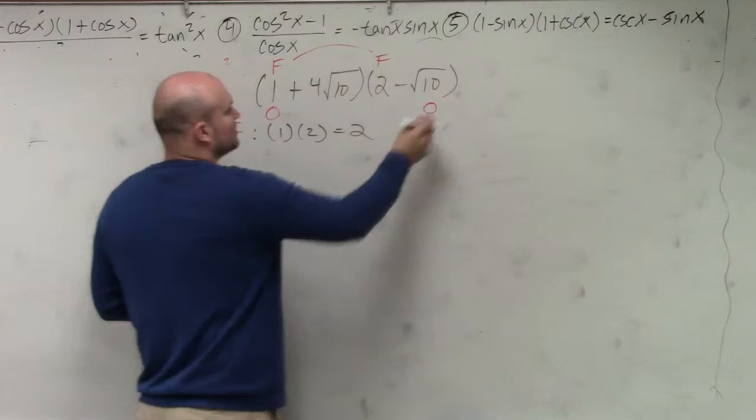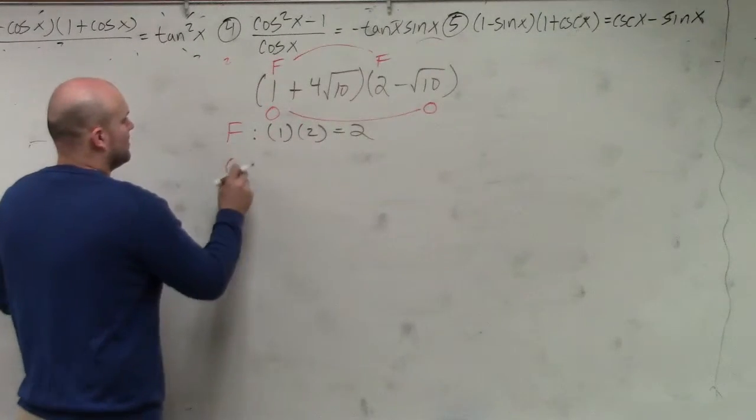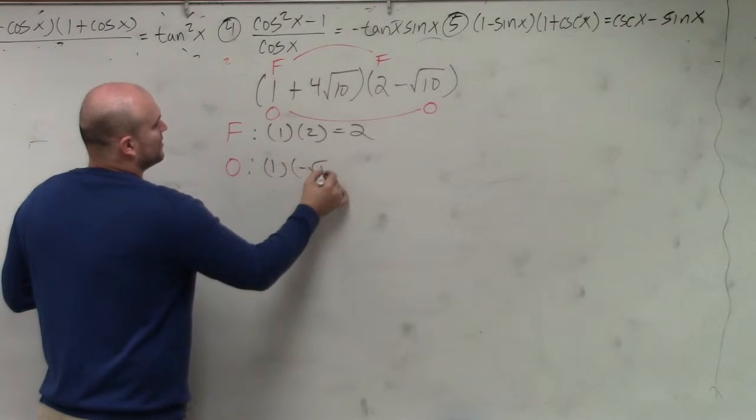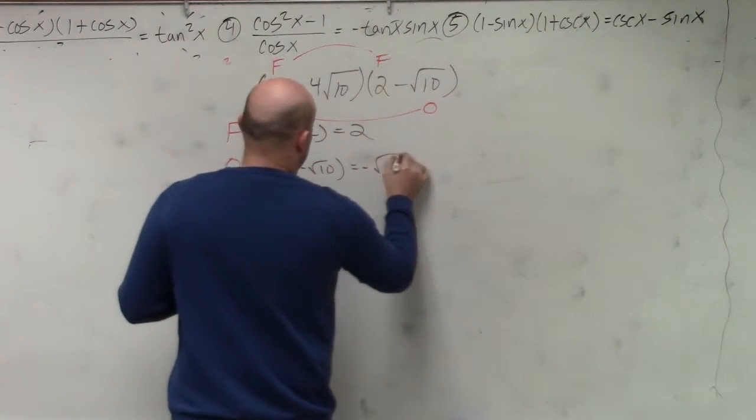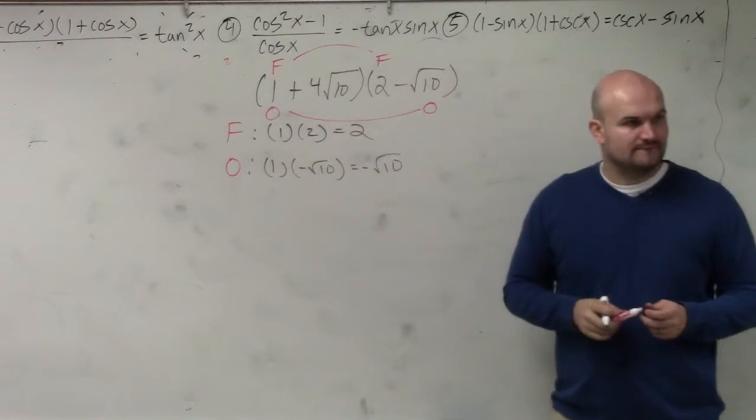Next one is O, which stands for the outer terms. So therefore, I multiply the outer terms, which is 1 times negative square root of 10, which equals negative square root of 10. Does everybody follow me on that? Yes. OK.